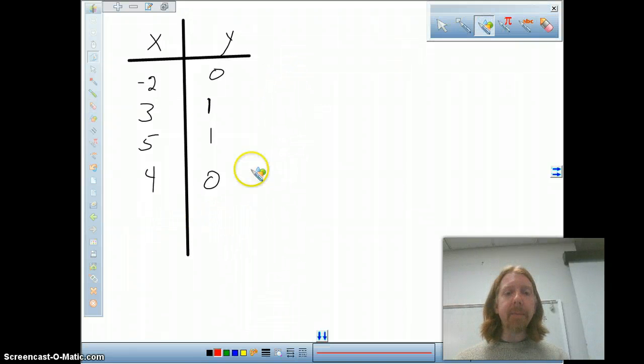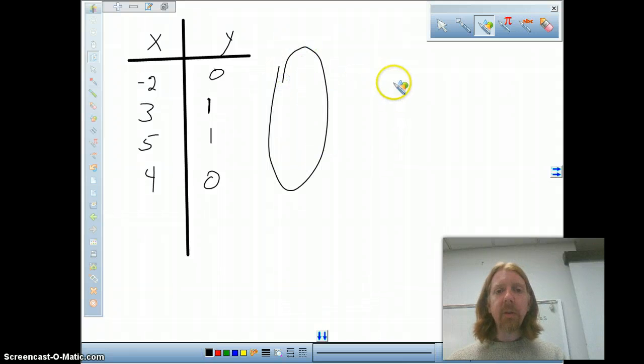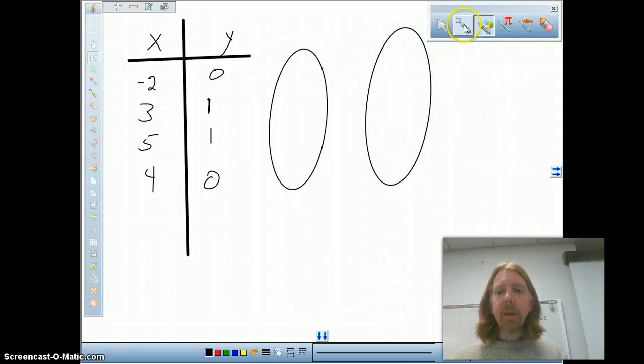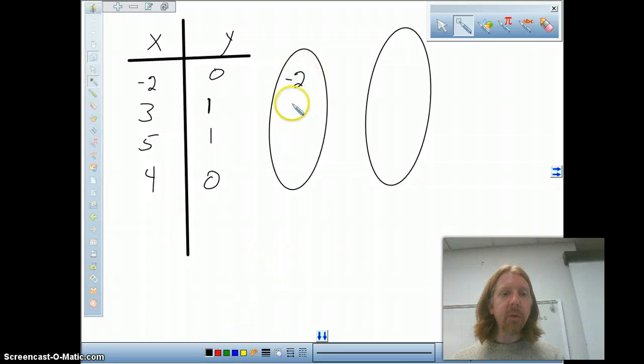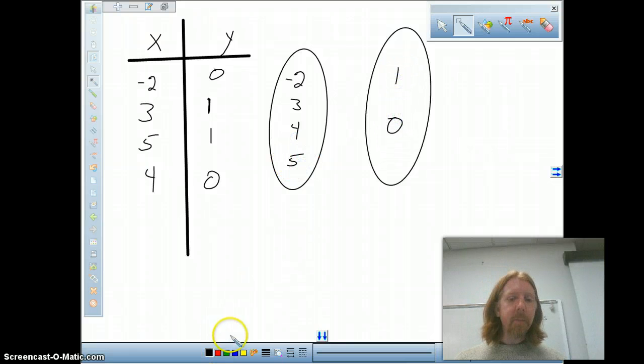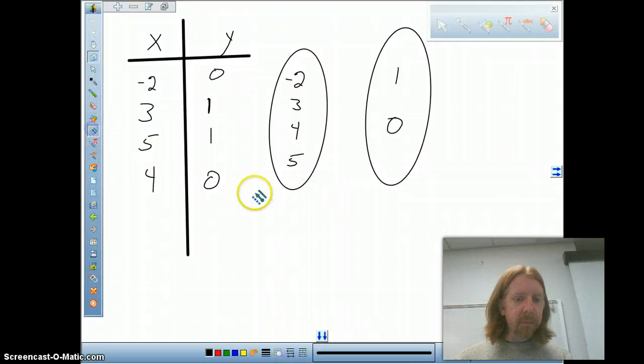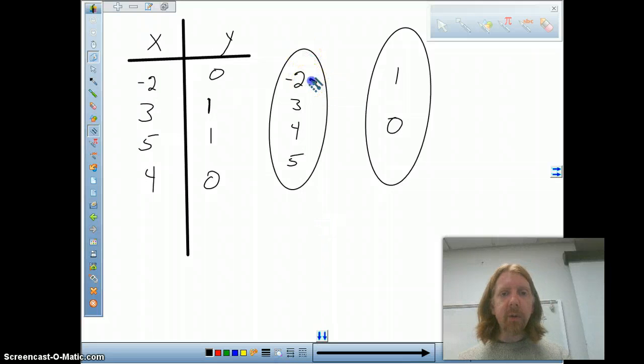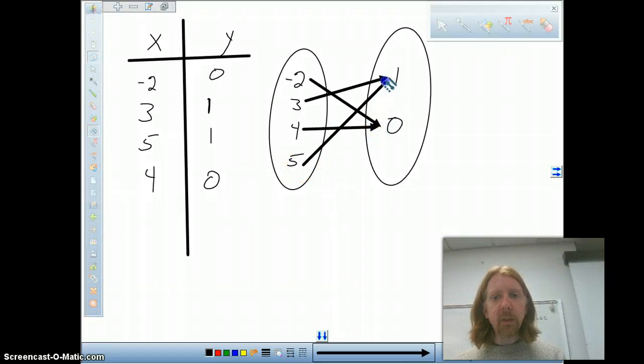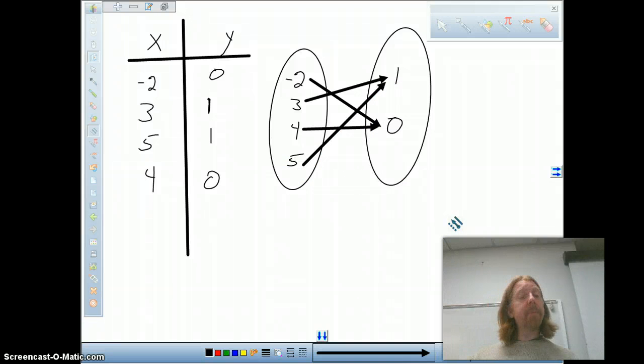If I were to draw this as a map, so here are my x values, and here are my y values. And so in my x values, I've got negative 2, 3, 4, and 5. And in my y values, I have 1 and 0. So now when I go to draw my arrows, negative 2 maps to 0. Let's change pens up here. Negative 2 goes to 0, 3 goes to 1, 4 goes to 0, 5 goes to 1. So this relation appears to follow the rule of being a function. Every item in the x value gets used and goes to exactly one value in the range.